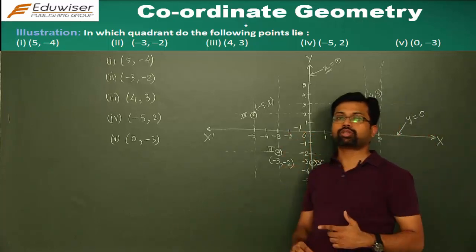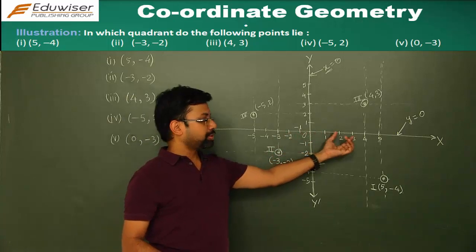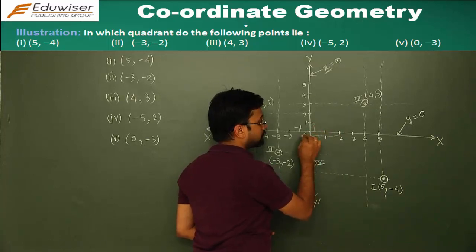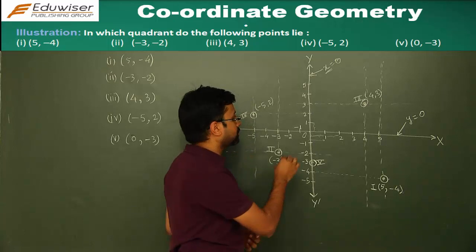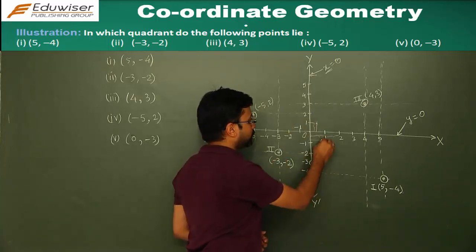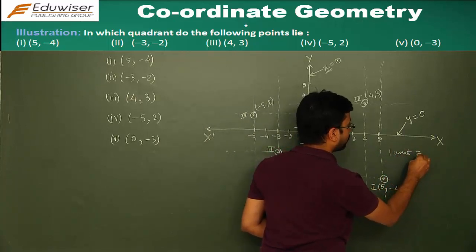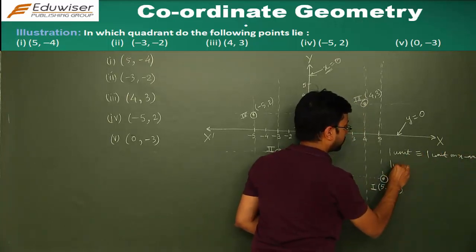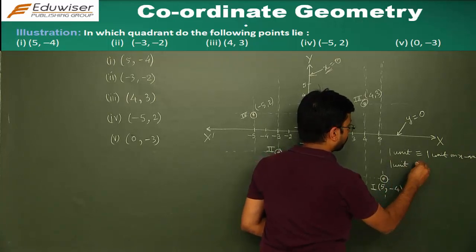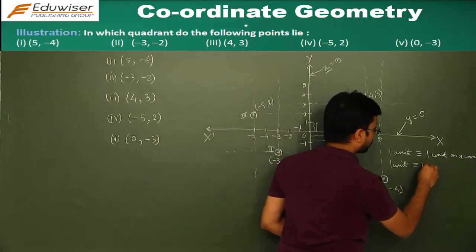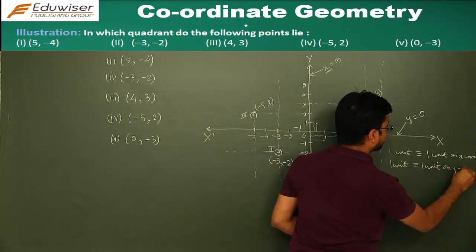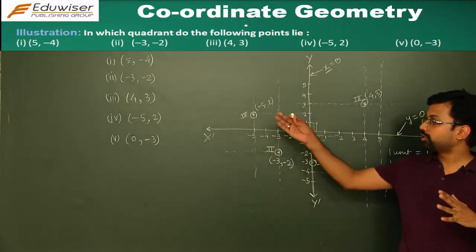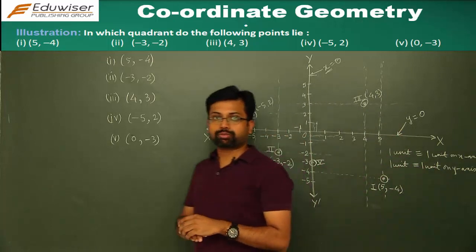This is how you go about plotting points given the rectangular axis. You first find out the origin, then draw the rectangular axis with a suitable division on the graph paper. It is not necessary that the measurement used on the x-axis is the same as on the y-axis. Here we have taken one unit of graph paper equal to one unit on both the x-axis and the y-axis.